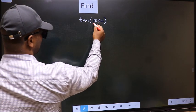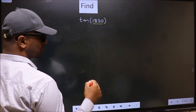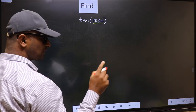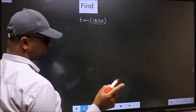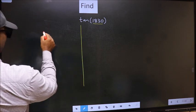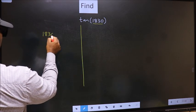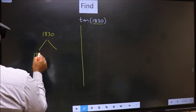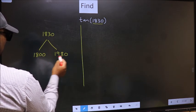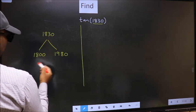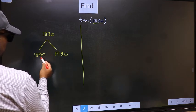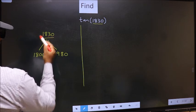Here we have 1830. Now you should check 1830 lies between which two multiples of 180. What I mean is, 1830 lies between 1800 and 1980. This is 180 times 10 and this is 180 times 11. Between these two numbers, 1830 lies.